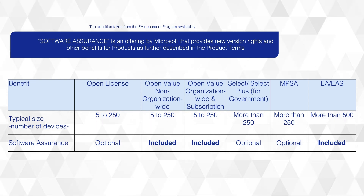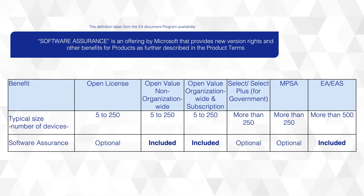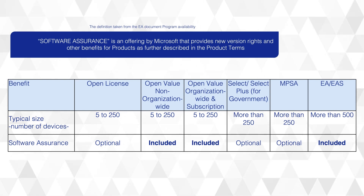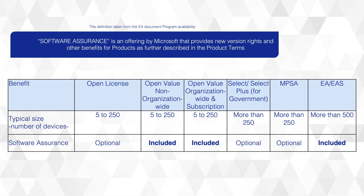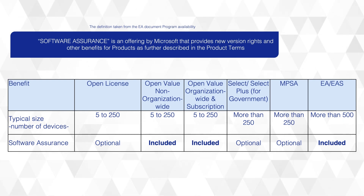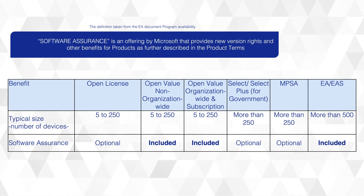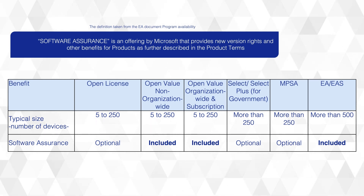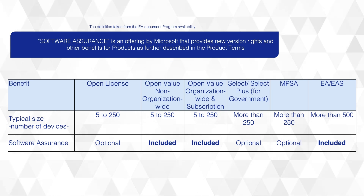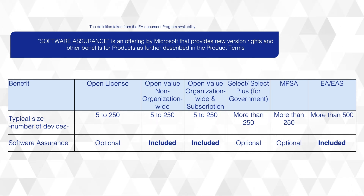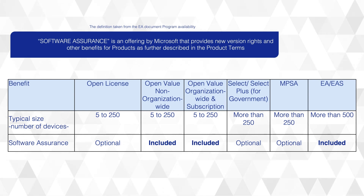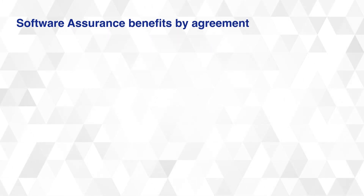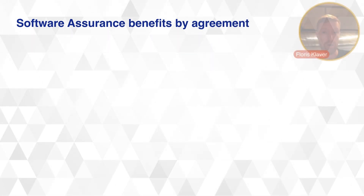The slide also lists typical company sizes for the different programs and how you can purchase Software Assurance. For certain programs it is optional — like Open License, Select Plus, or MPSA — but for other contracts like Open Value and the Enterprise Agreement, Software Assurance is a mandatory inclusion. If you buy licenses through Open Value or the Enterprise Agreement, you must purchase Software Assurance with them.